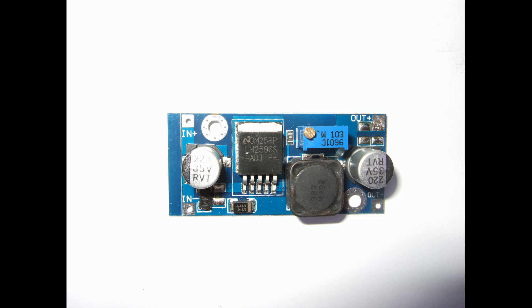Simple converters like this one have only one trimmer which is used to choose the desired voltage. Modules like that are useful if you want to reduce the voltage from a high level to a lower level.